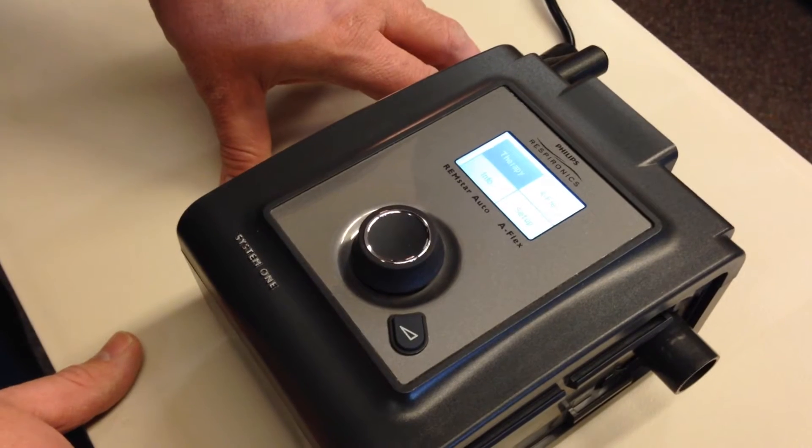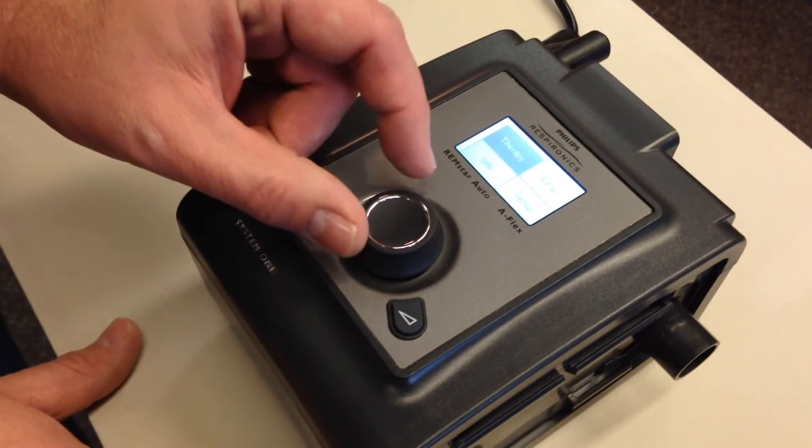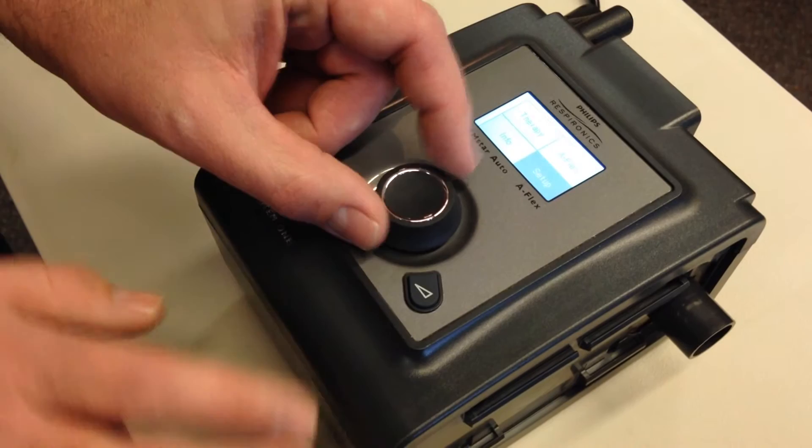To check the total hours on the Respironics System 1 device, from the home screen, select the setup option.